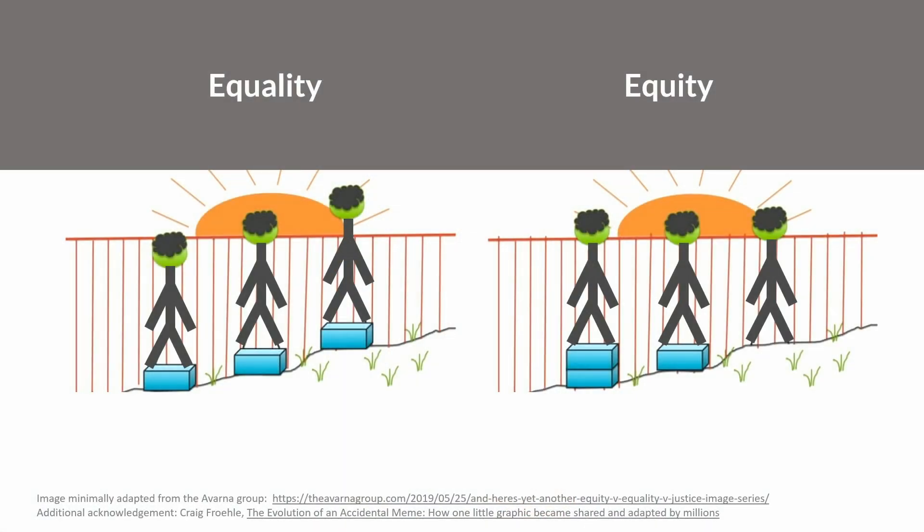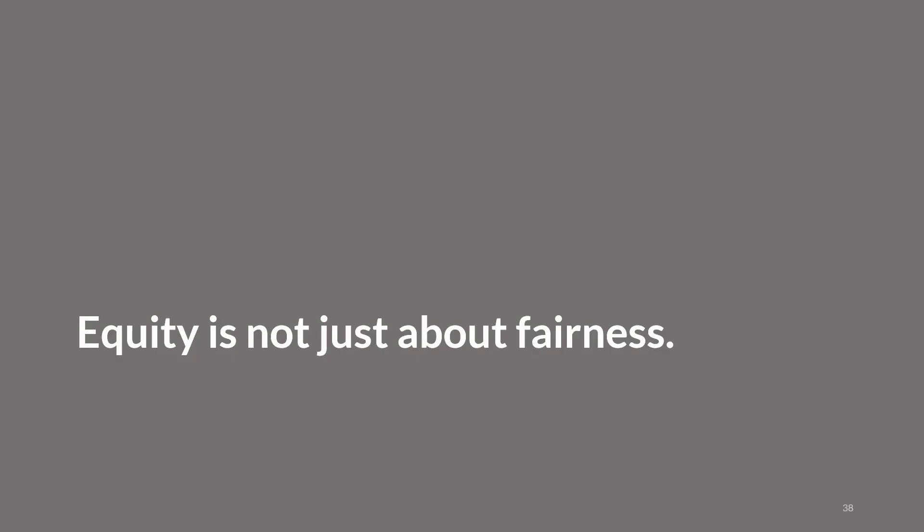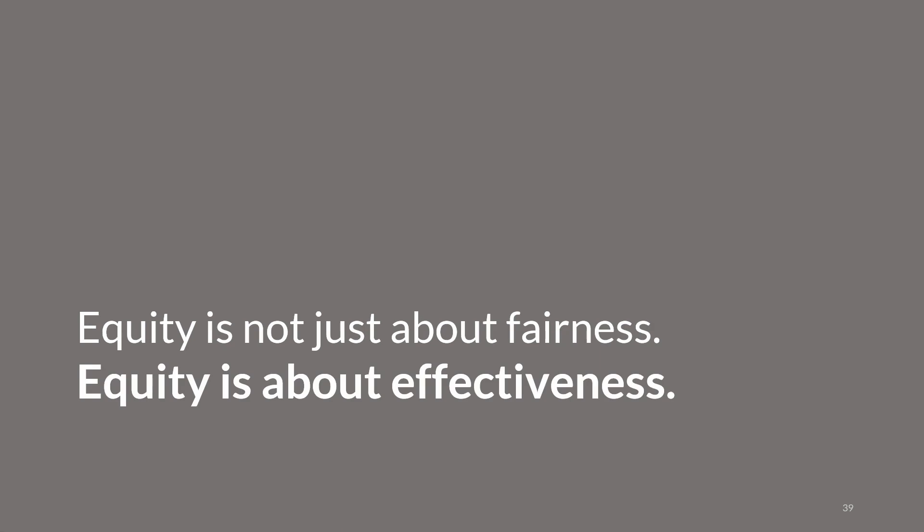Now, equity is a term you're probably hearing a lot these days, and I get asked about the difference between equity and equality. On the left-hand side, we have an equal allocation system — in this system, everyone gets the same crate regardless of where one stands. You can see why that's problematic. On the right-hand side, we have an equitable allocation system — everyone gets the crate needed to achieve the goal. Equity is often discussed as a concept grounded in fairness, and that's important. But equity is not just about fairness. In a pandemic, equity is about effectiveness.